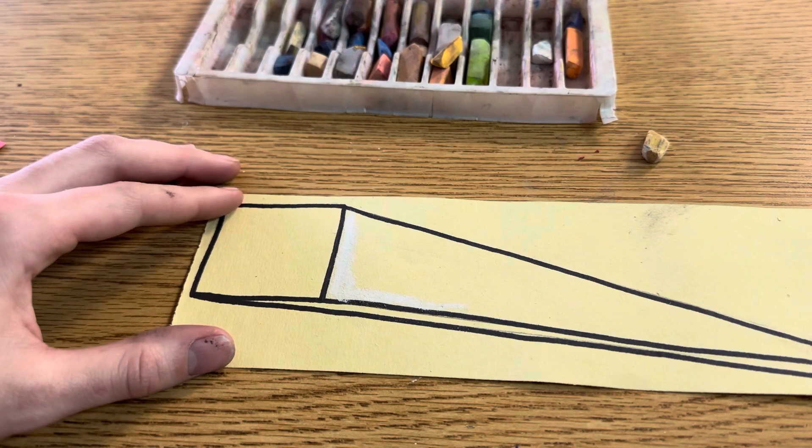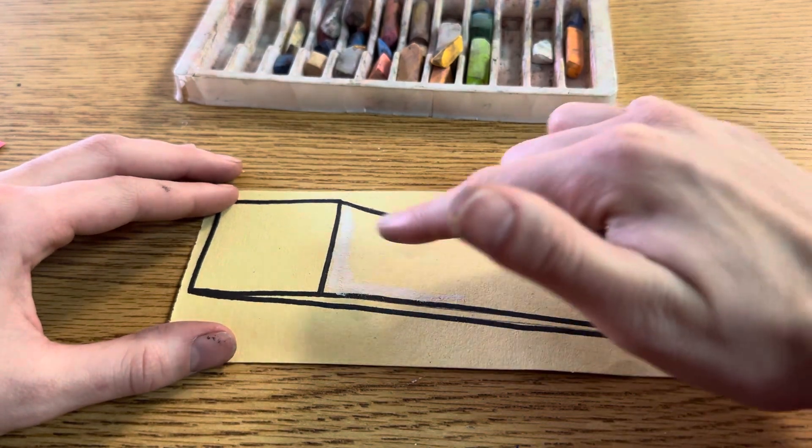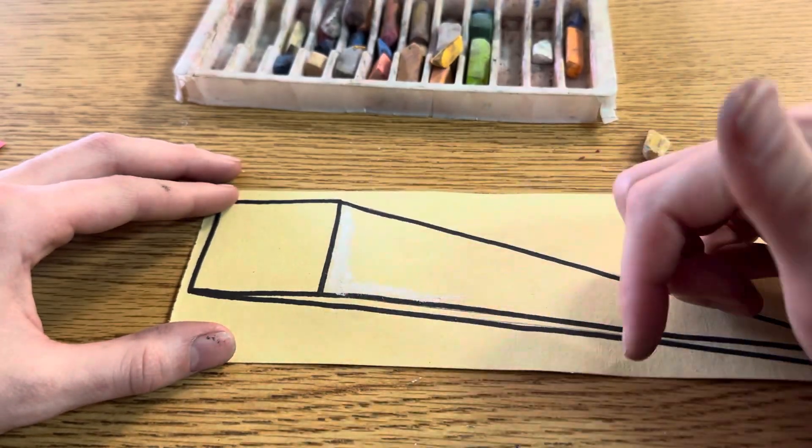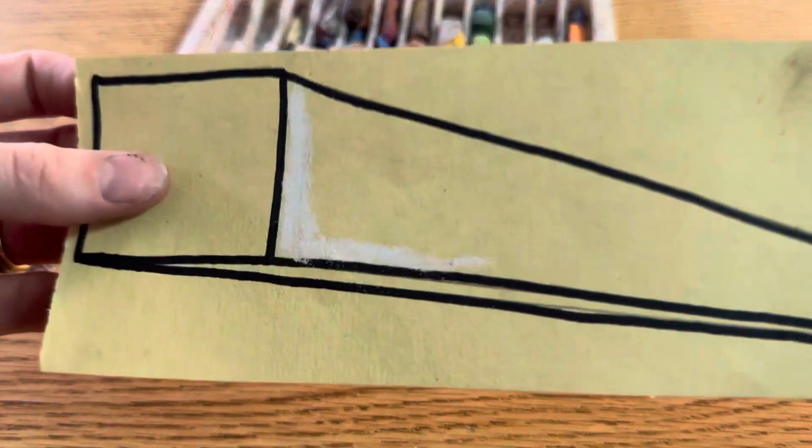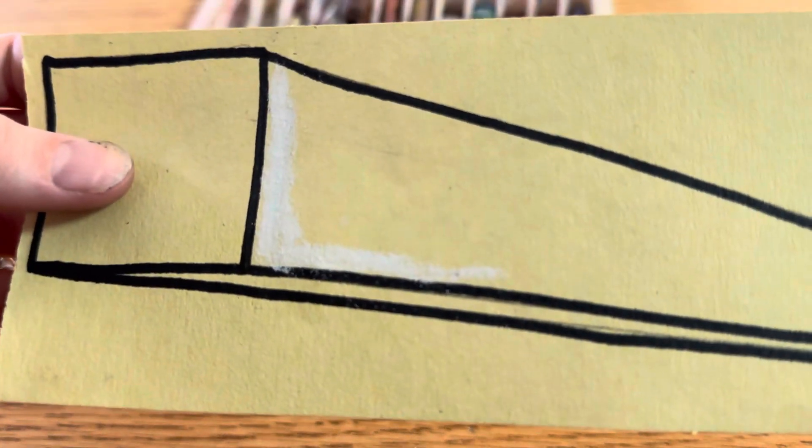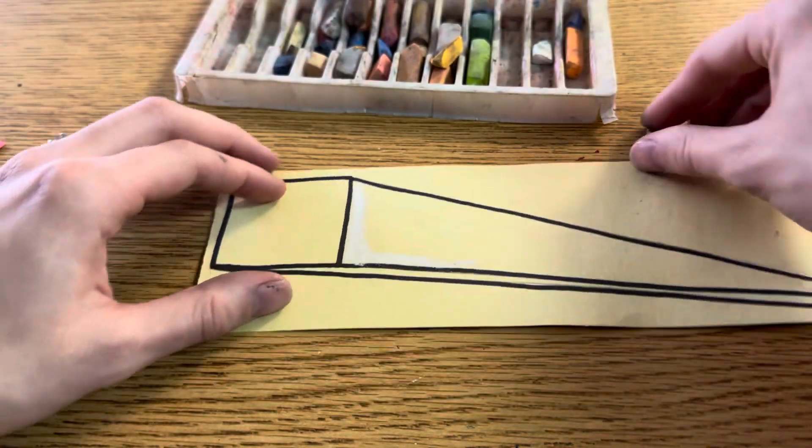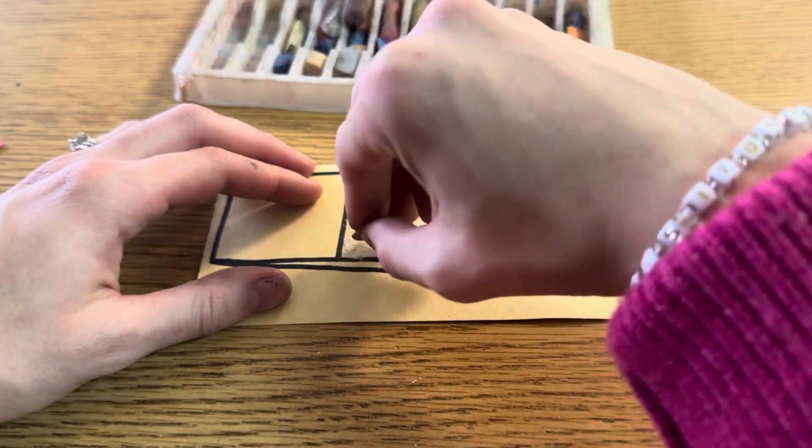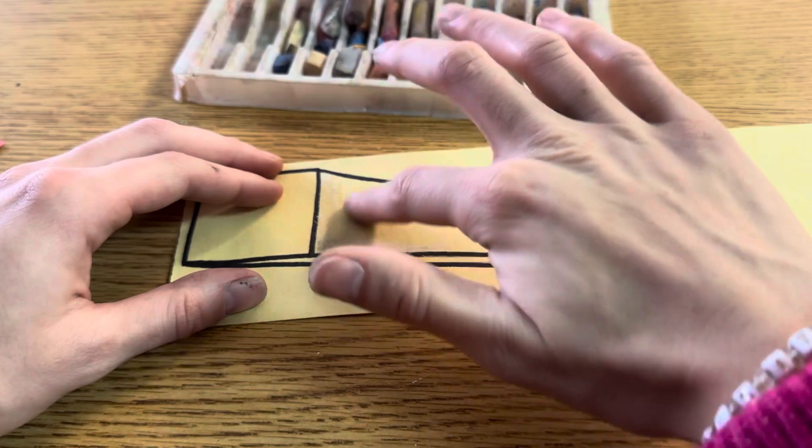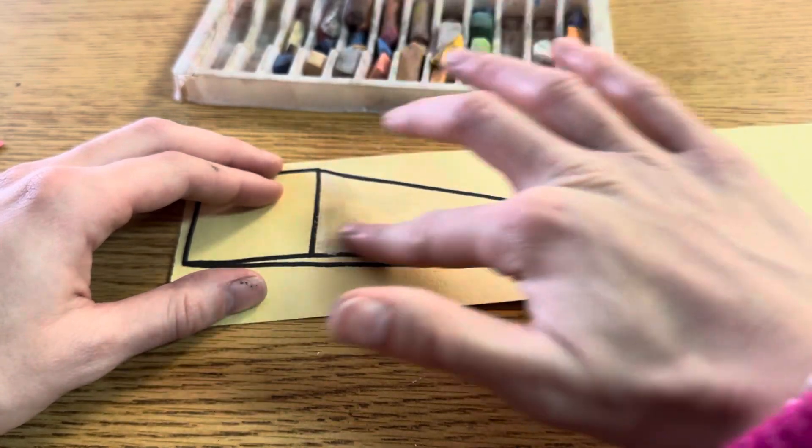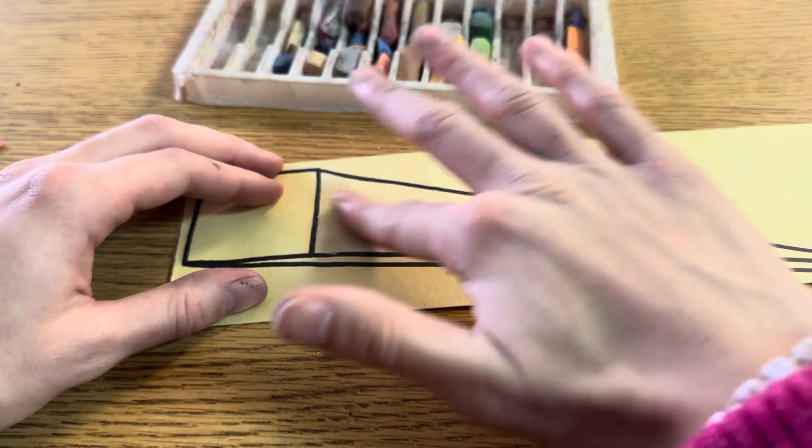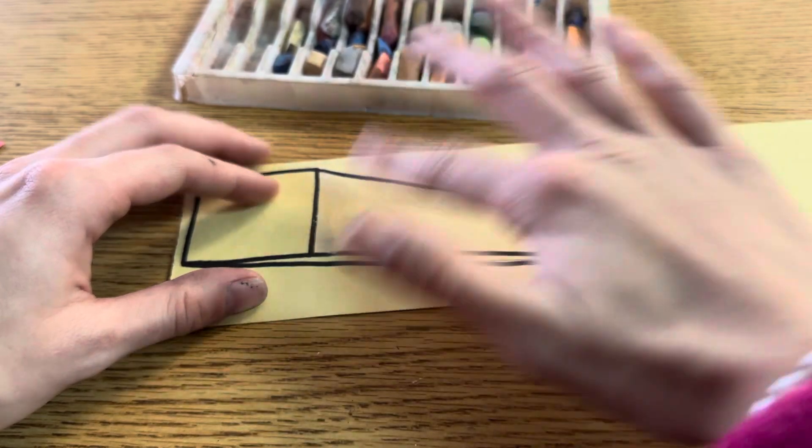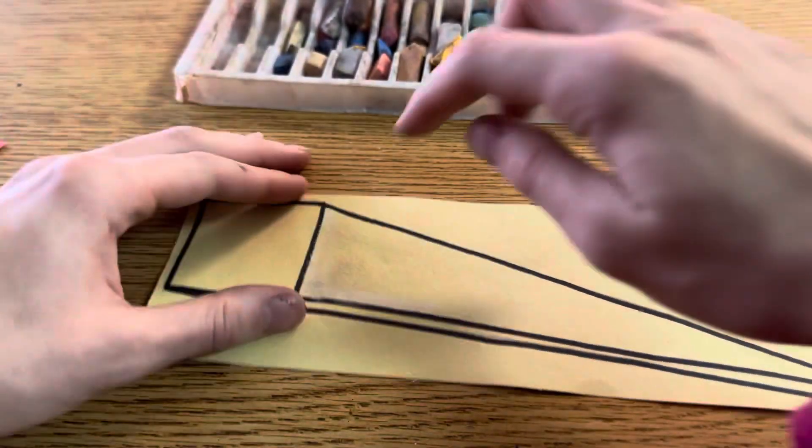Now we don't want to leave your highlight a solid line. Can you see right here how it's a solid line? We want to blend that. So what I'm going to do, and you can add a little bit of the yellow too if you want, is I'm going to use my finger and just kind of blend it a little bit more that way we don't see that harsh line.